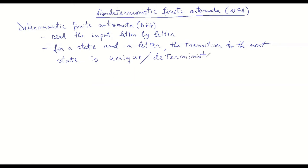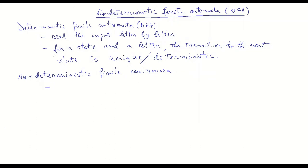It is really these two points that non-deterministic finite automata change. In some sense, non-deterministic finite automata propose a model of computation with more leeway for how the computation is defined. They take two types of freedoms with their mode of action. Structurally they are not that different from deterministic ones, but they get rid of these two constraints. The first freedom is the ability to skip moving the reading head.